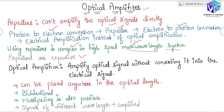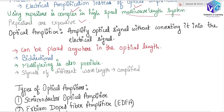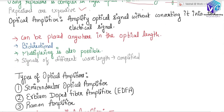In the optical amplifier, we can amplify the optical signal without converting it to the electrical signal. We can directly convert the optical signal into its amplified form. We need not convert the optical signal back into the electrical signal — the optical signal can be directly enhanced with the help of an optical amplifier.